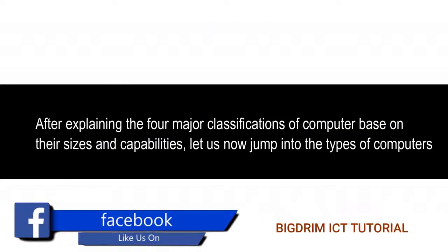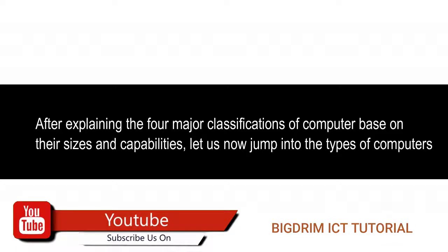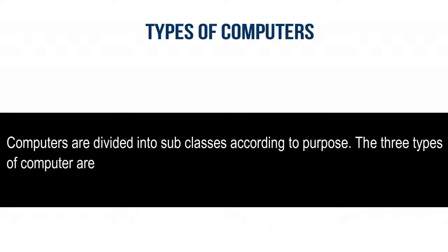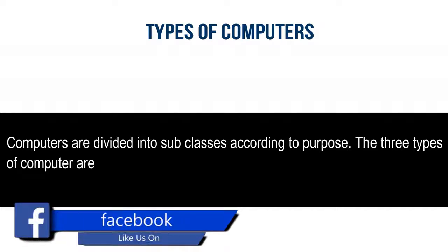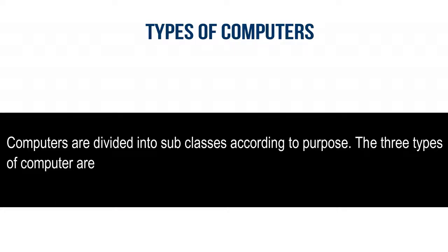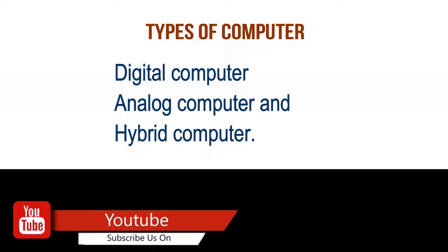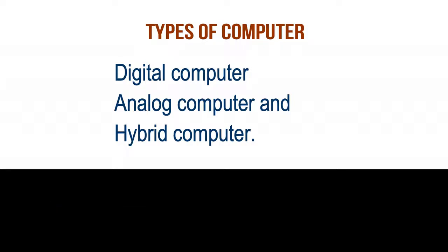After explaining the four major classifications of computer based on their sizes and capabilities, let us now jump into the types of computers. Computers are divided into subclasses according to purpose. These three types of computers are Digital Computer, Analog Computer, and Hybrid Computer.